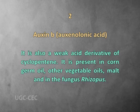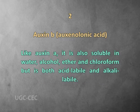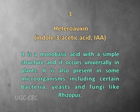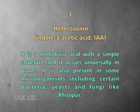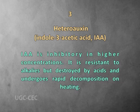The next is auxin B, or auxinolonic acid. It is also a weak acid derivative of cyclopentane. It is present in corn germ oil, other vegetable oils, malt and in the fungus Rhizopus. Like auxin A, it is also soluble in water, alcohol, ether and chloroform, but is stable in both acid and alkaline solutions. The next is heteroauxin, or indole-3-acetic acid, shortly known as IAA. It is a monobasic acid with a simple structure and it occurs universally in plants. It is also present in some microorganisms including certain bacteria, yeast and fungi like Rhizopus. IAA is inhibitory in higher concentrations. It is resistant to alkalis but destroyed by acids and undergoes rapid decomposition on heating.